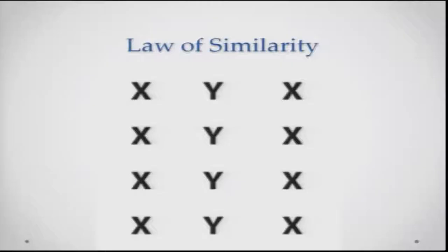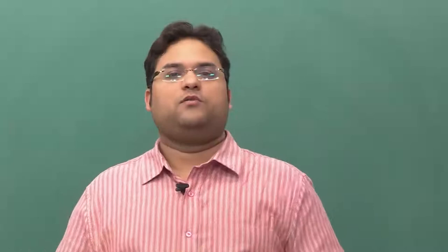Another law the Gestalt psychologists put forward is the law of similarity — this basically says that you club similar-looking things together. If I ask you what you see here, you will say you are seeing 2 rows of X's and 1 row of Y's. But if you look carefully, you might also be pressed to suggest that you are actually seeing 4 rows of X Y X.